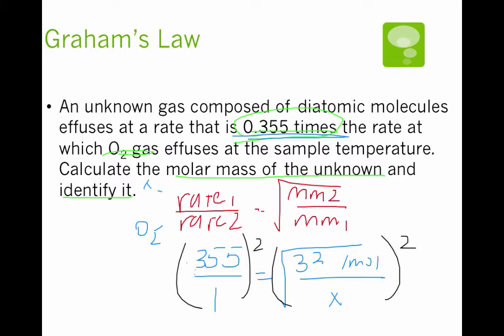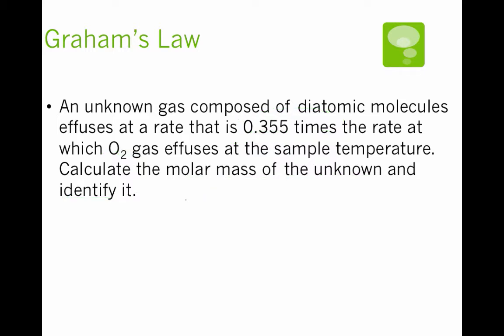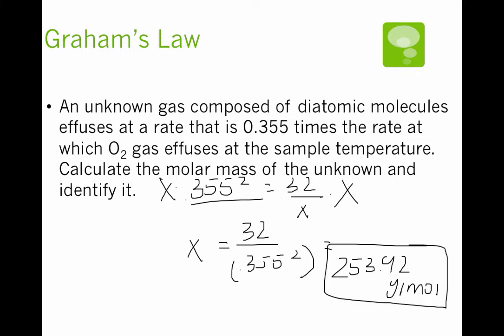Now this is where you have to be really careful with the math behind this. Be careful with your algebra. So to start, I'm going to square both sides. So once we've squared both sides, we're going to get 0.355 squared equals 32 over X. Now we need to get X on a side by itself. We can't just divide by 32 because that's going to leave us 1 over X. So I'm going to multiply both sides by X and divide by 0.355. So I'm going to get X equals 32 divided by the quantity 0.355 squared. I got 253.92 grams per mole. So that's the first part is calculating the molar mass.